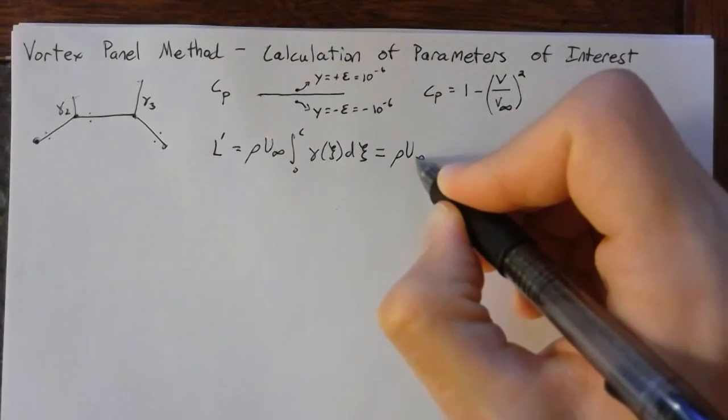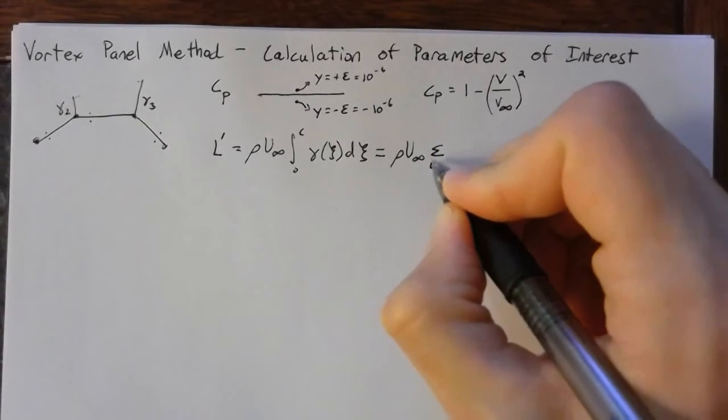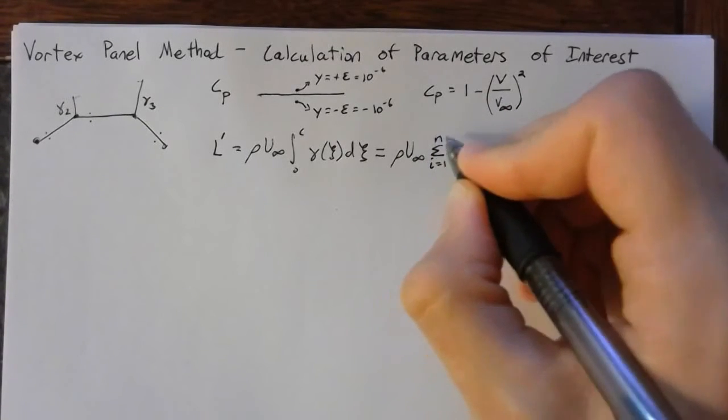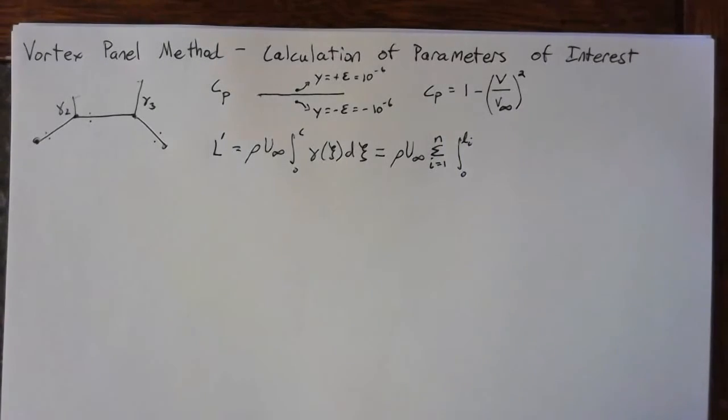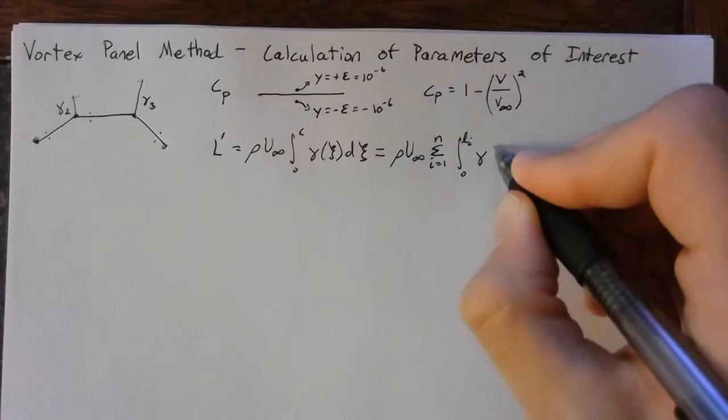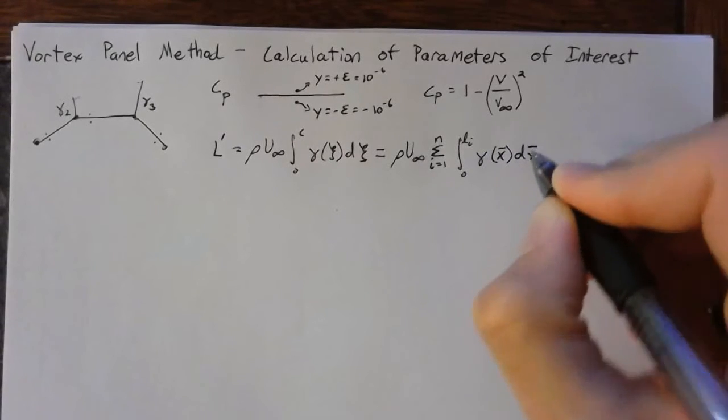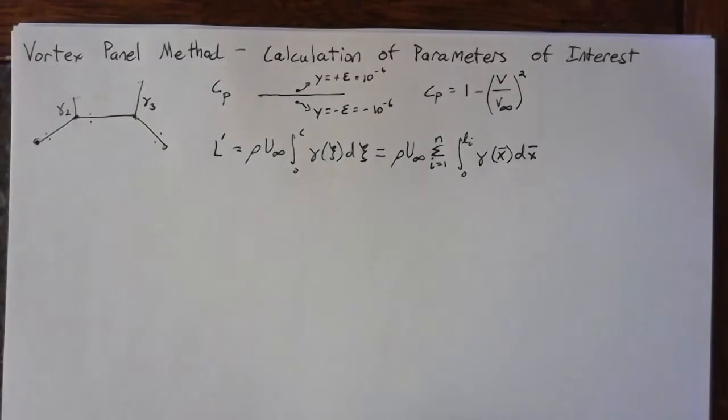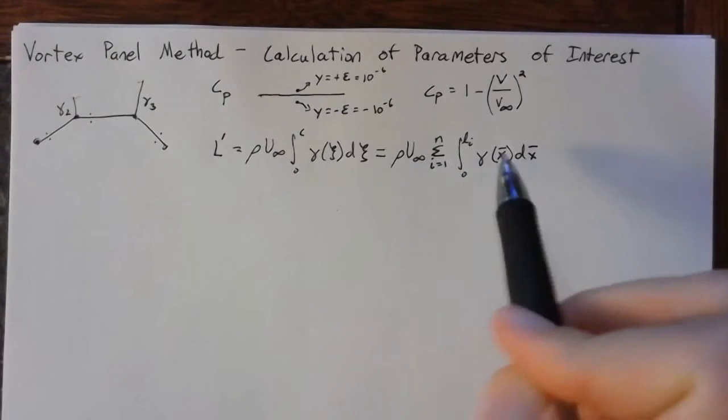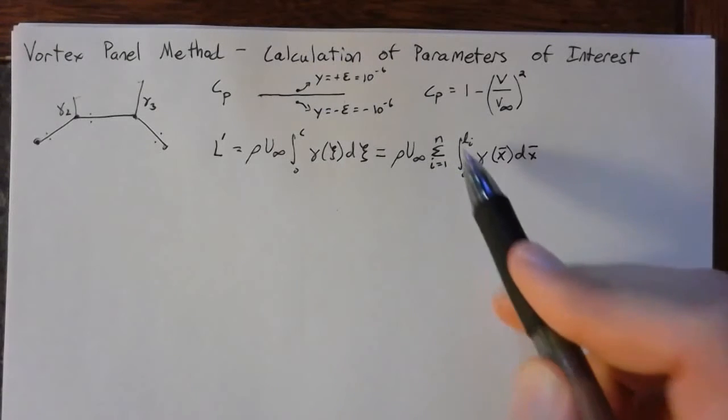So this is going to be equal to rho times u infinity. And then we sum over each of our panels, so this is from i is equal to 1 to n. And we will integrate from 0 to L of i, and we'll integrate gamma of x bar dx bar, where x bar, if you remember, is our distance along our panel in the panel coordinates. So these integrals are exactly the same, just we've split them up so that we're integrating over each individual panel.